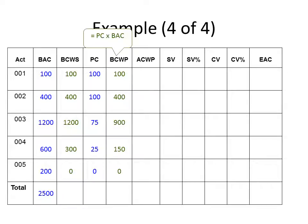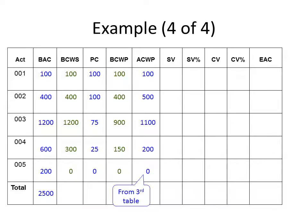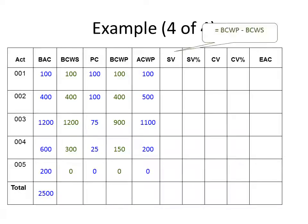The site staff also reported the actual money spent on each activity, so we load the actual cost of work performed (ACWP) table from the field data. We now use these figures to calculate schedule variance. Schedule variance is computed as: budgeted cost of work performed (earned value) minus budgeted cost of work schedule (planned value). The schedule variance for activities one and two is zero, meaning we are on target as far as time is concerned.